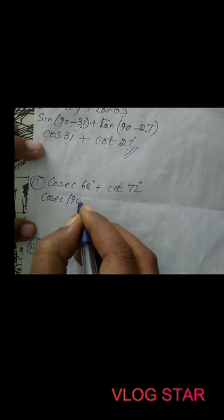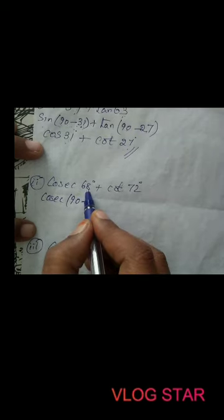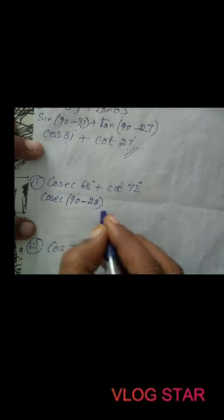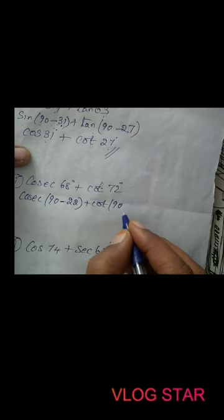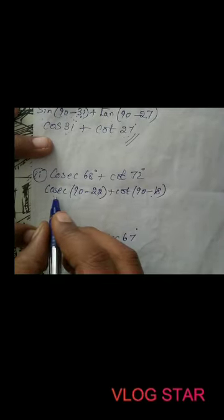Similarly, cosec(68°) + cot(72°). cosec(68°) = cosec(90° − 22°) = sec(22°), since 90 − 22 = 68. cot(72°) = cot(90° − 18°) = tan(18°), since 90 − 18 = 72. So the expression becomes sec(22°) + tan(18°), both angles between 0° and 45°.